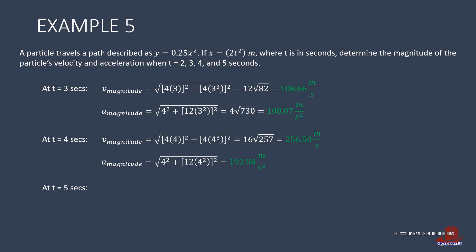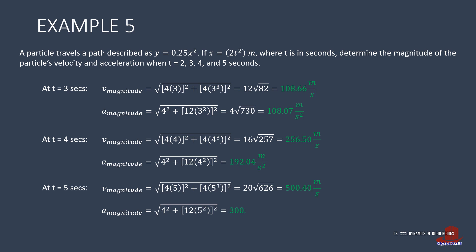Having t equal to 5 seconds, velocity is taken as the root of (4×5)² plus (4×5³)², simplified as 20 root of 626, or 500.4 meters per second. The acceleration is the root of 4² plus (12×5²)², simplified as 300.03 meters per second squared.